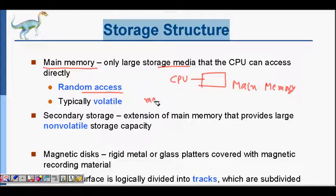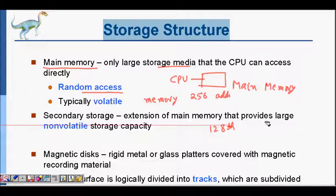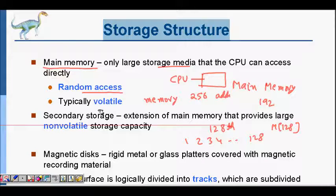It is random access. What does random access mean? Let's say my memory has 256 addresses and it can store 256 data. Random access means if I want something — say the 128th data — I can directly access it. I don't have to linearly go from 1, 2, 3, 4 till 128. I can directly say 'memory at 128.' I can access the 192nd memory directly. Any memory location you can access randomly.